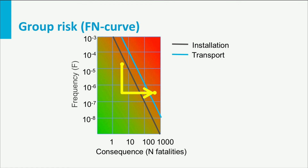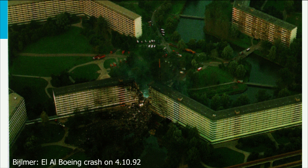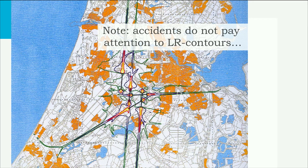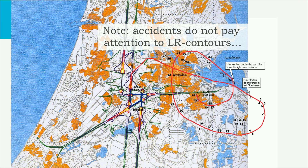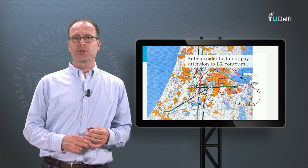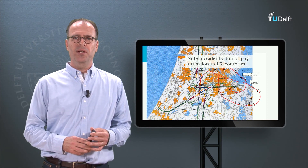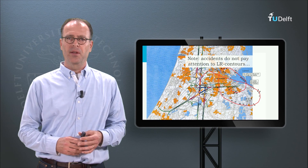In the next slides I want to show that risk contours are theoretical concepts and accidents do not really pay attention to them. On October 4, 1992, an El Al Boeing crashed into an apartment building in the Bijlmer in Amsterdam. The Boeing's trajectory is shown in red; the green contours are the low localized risk contours where you don't expect a fatality very often — and as you can see, the Boeing crashed exactly in one such area. This finishes my first lecture on risk and safety and the first steps of a risk analysis process. Thank you for your attention.